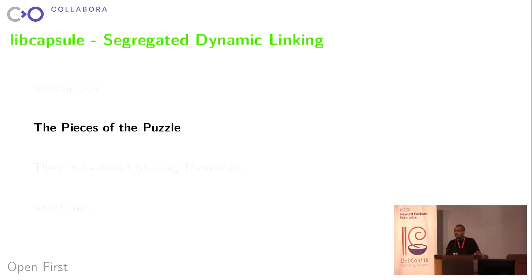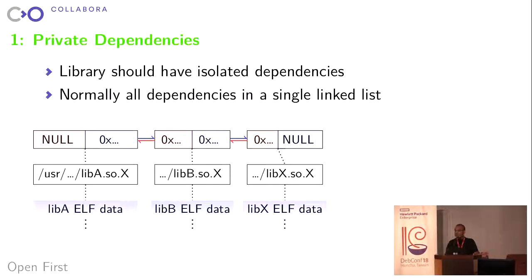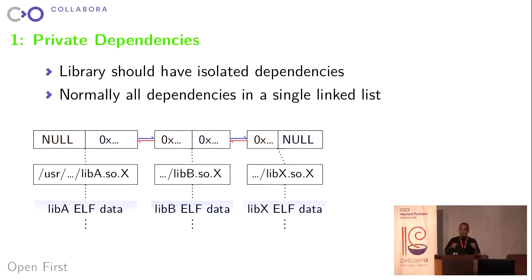Let's look at the pieces of the puzzle. Private dependencies: libraries should have isolated dependencies. Normally all the dependencies in your link chain are in a single link list, and the linker will go along that chain until it finds a symbol it thinks you need. Even if we can get another library into this chain, the position matters, and because we've got different libraries with different requirements, a single link list means we can't just use this mechanism.